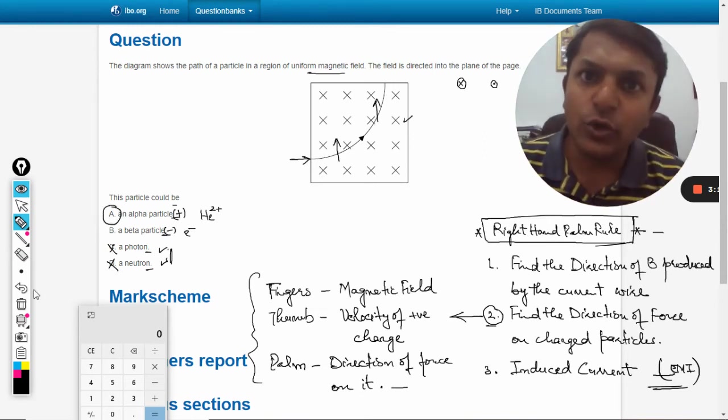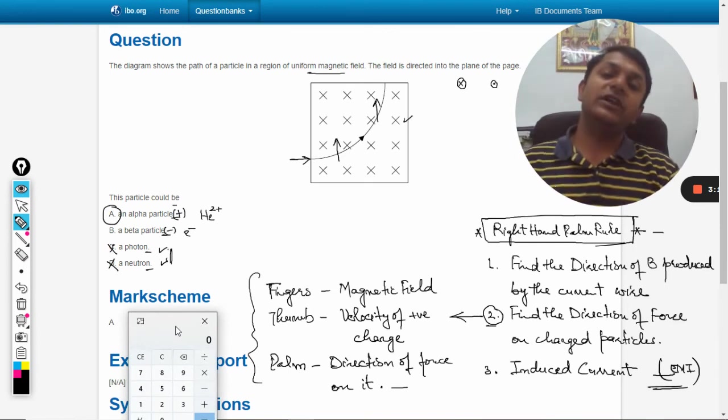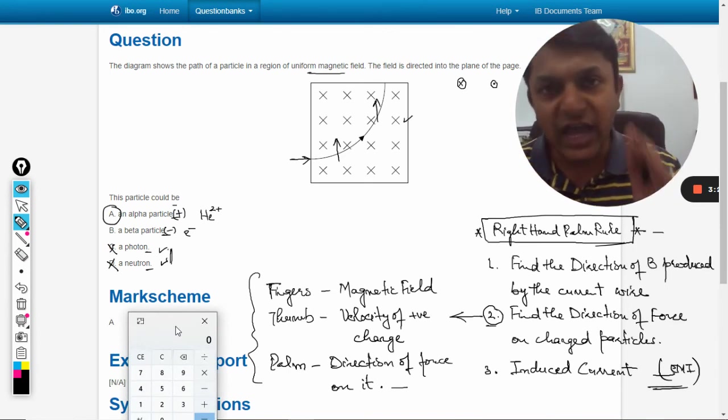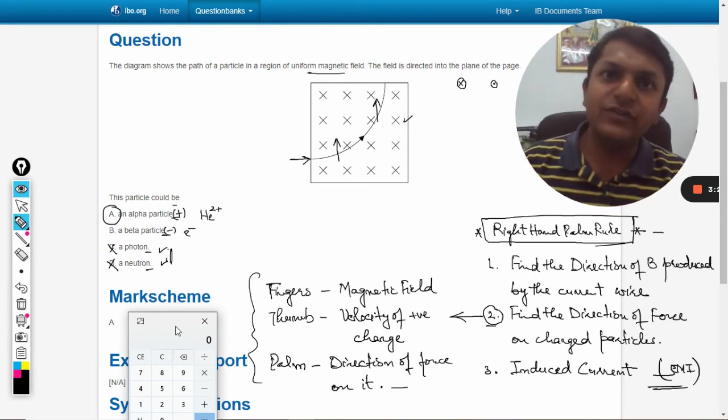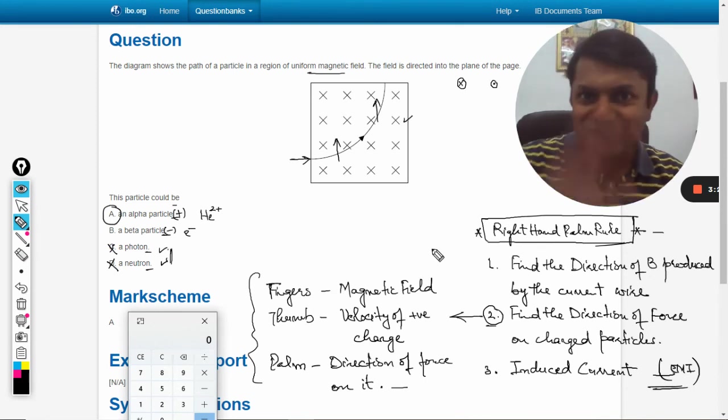Let's check the mark scheme. Absolutely correct—it is a positive charge, so alpha. It is an alpha particle. I hope this is very clear to you now. If there is any problem, please do comment. All the best!